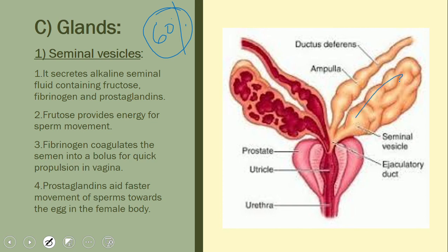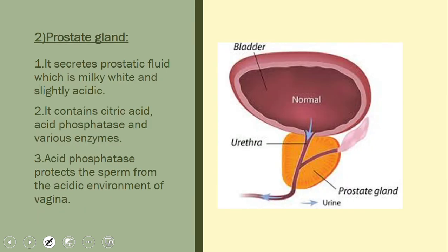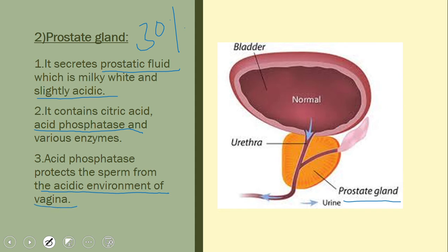The next gland is the prostate gland, located below the urinary bladder. It secretes prostatic fluid, which constitutes about thirty percent of the total semen. This fluid is milky white and slightly acidic because it contains acid phosphatase, which neutralizes the acidic environment of the female vagina and thereby protects the sperm.